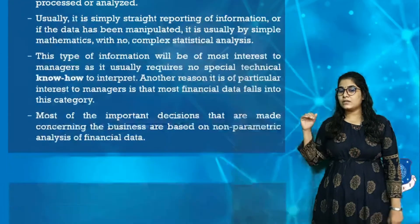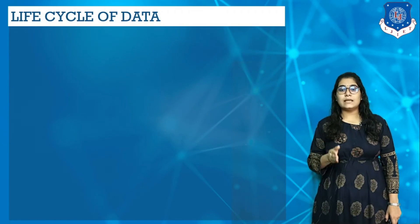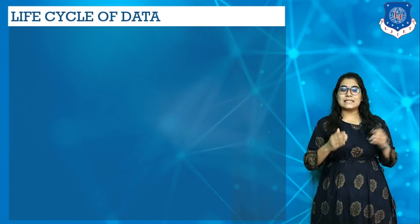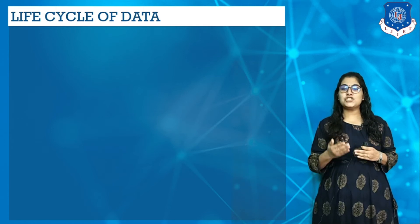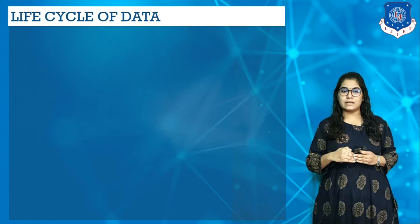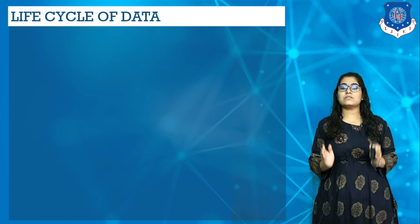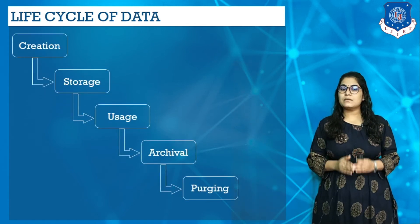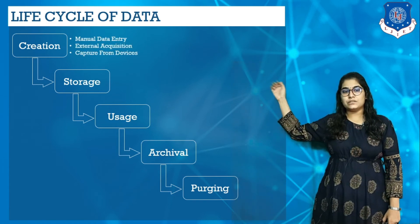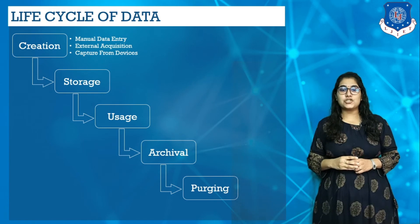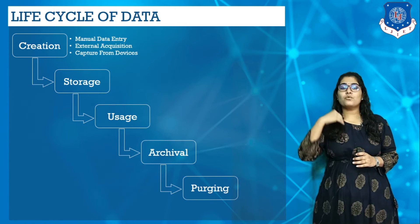Now let's discuss the life cycle of data. The data life cycle is the sequence of stages that a particular unit of data goes through from its initial generation to its eventual deletion. The data life cycle diagram is an essential part of managing business data through its life cycle. While there are many interpretations as to the various phases of a typical data life cycle, they can be summarized as follows. The first stage is data creation. The cycle starts with the generation of data. People generate data.